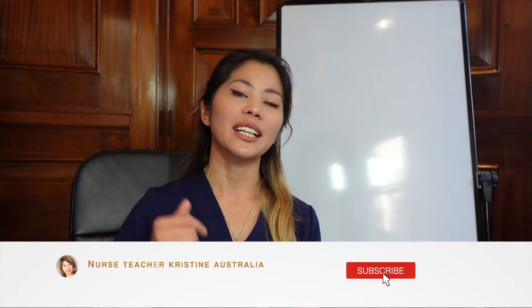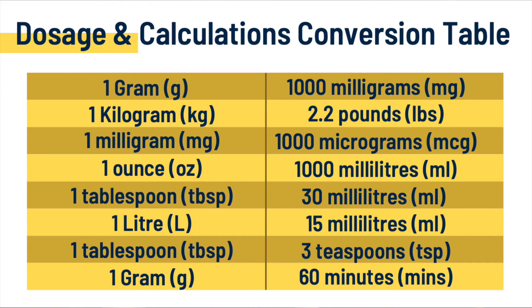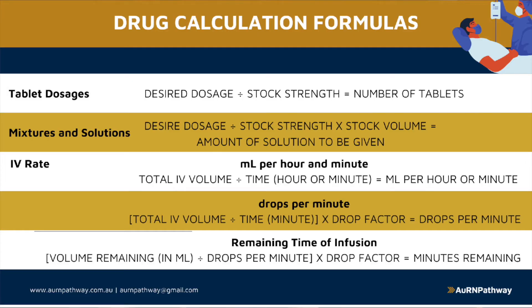If you haven't subscribed yet, please hit that subscribe button below so you'll be the first one to get notified whenever I upload informational videos. Now before we head into the five steps of medication calculation, it is important to first know and memorize the basics of drug calculation: the conversion table and the drug calculation formula. We won't be able to calculate without knowing these two main references, especially when taking your OSCE where you're only given eight minutes of performance time.